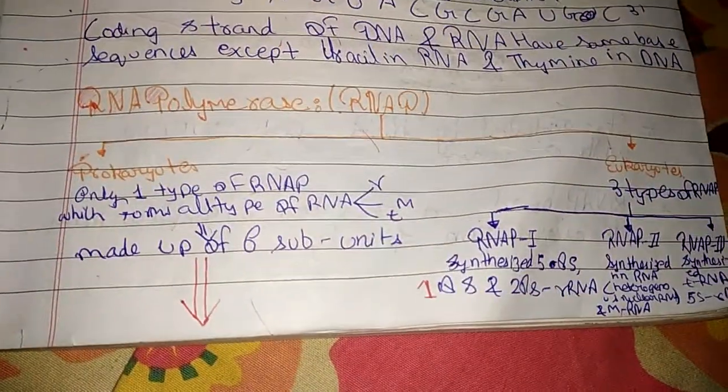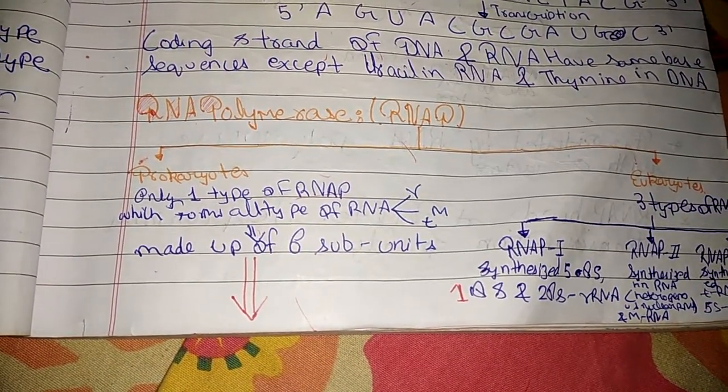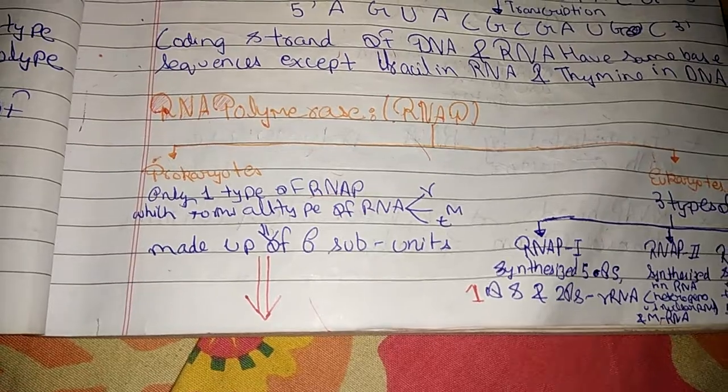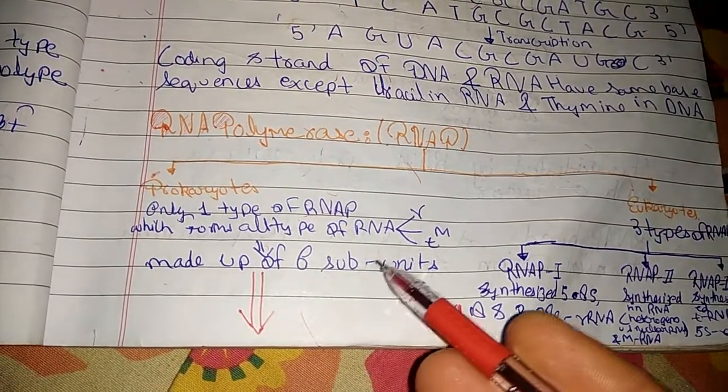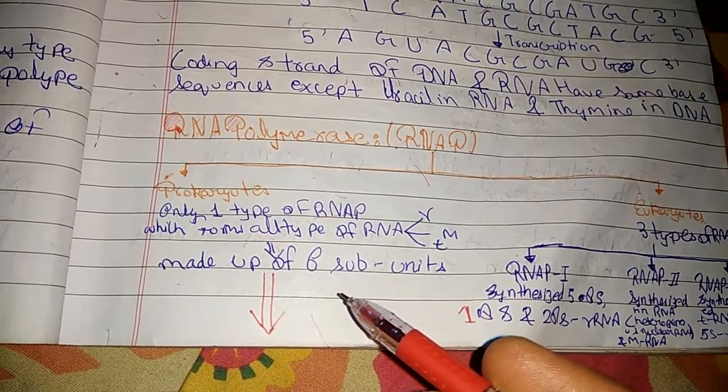Now RNA polymerase in prokaryotes. Only one type of RNA polymerase which forms all the types of RNA, that is rRNA, mRNA, tRNA, made up of 6 subunits, that is 2 alpha, beta, beta dash, gamma, omega.